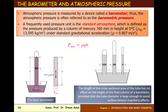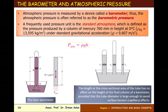Torricelli's basic barometer: an inverted tube is placed in a mercury reservoir. To measure atmospheric pressure, the mercury column height H is 760 mm. The cross-sectional area of the tube is not important — whether A1 > A2 > A3, the height H remains the same. Therefore, the cross-section area is not important for calculating atmospheric pressure with a barometer.